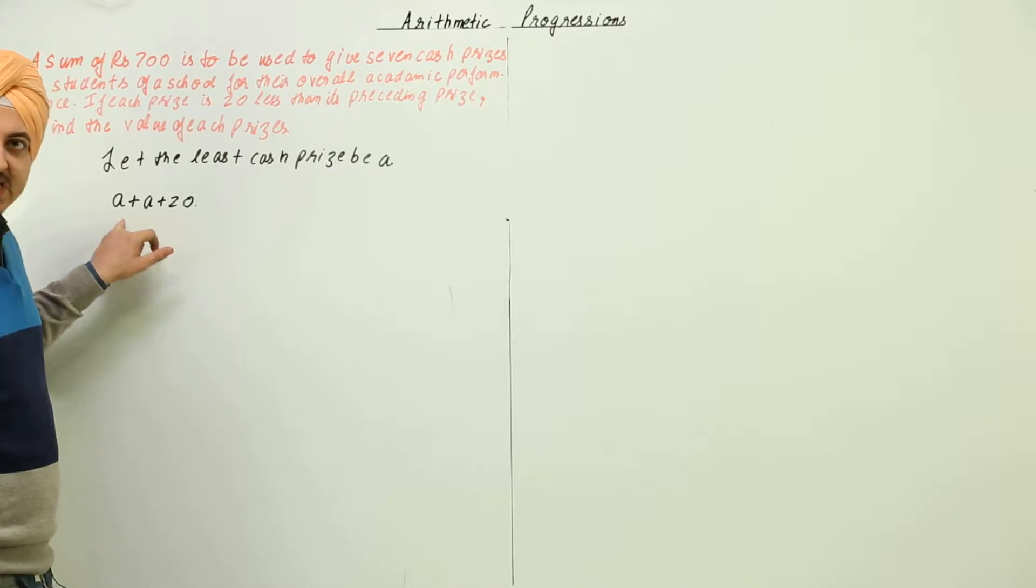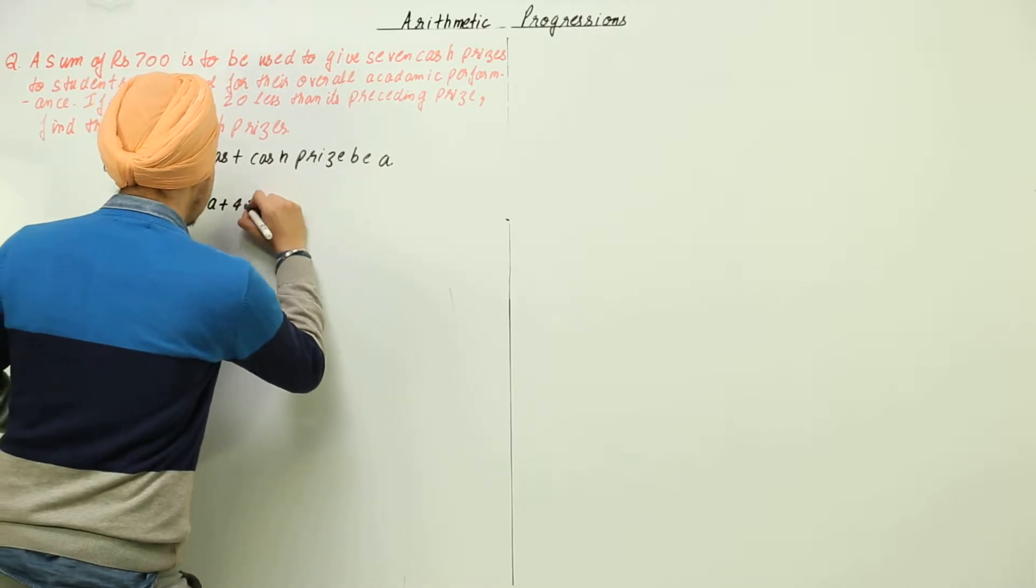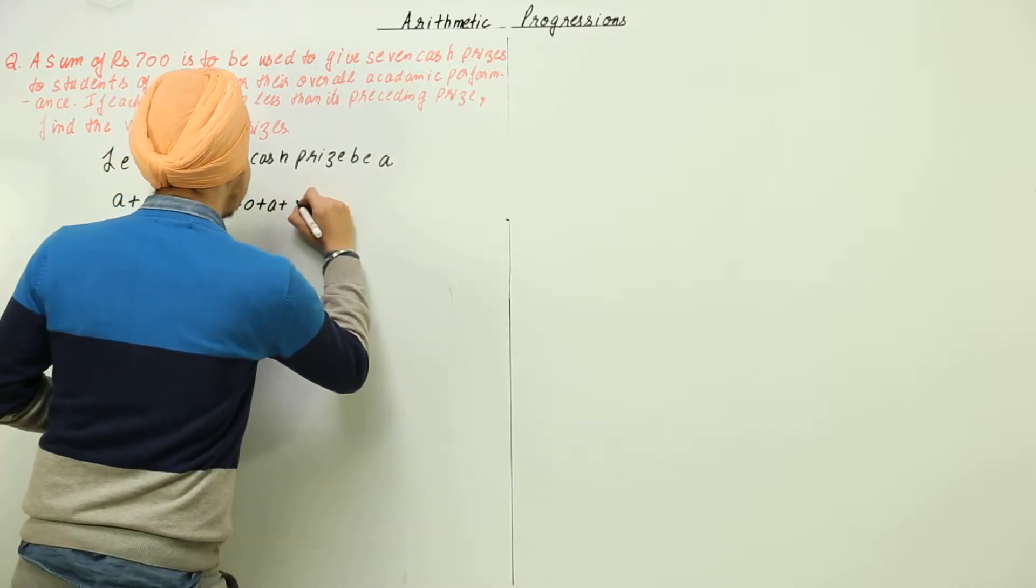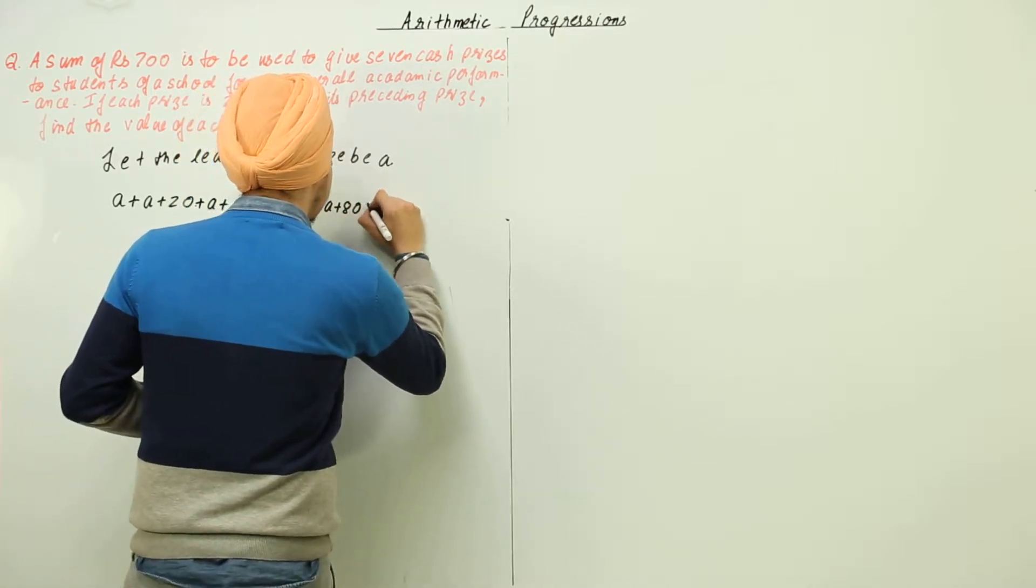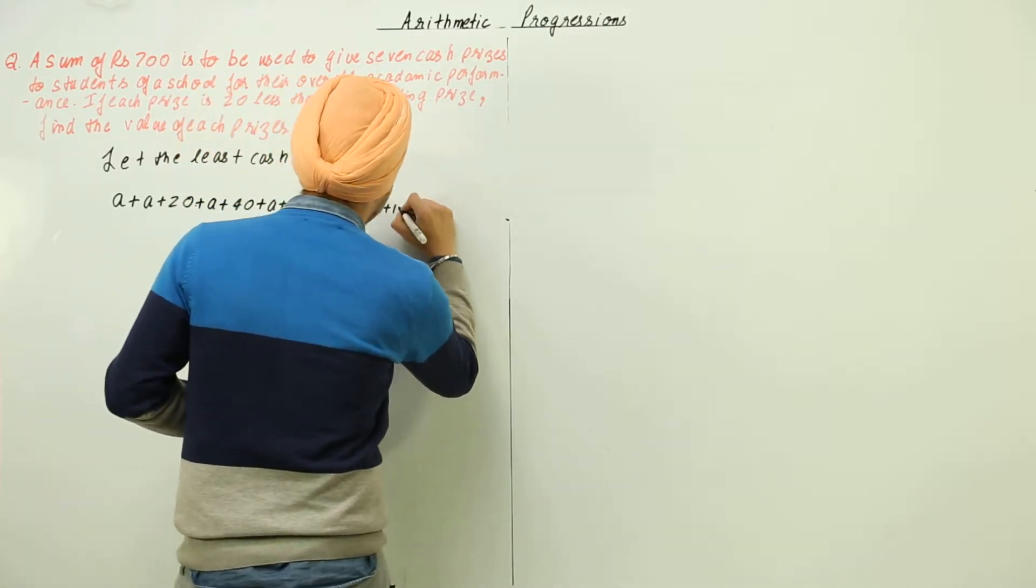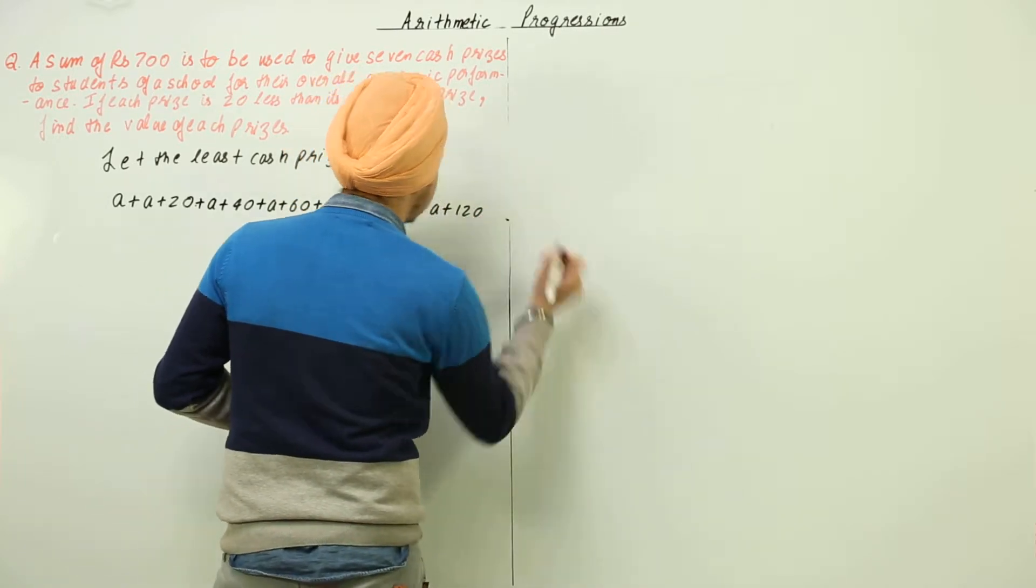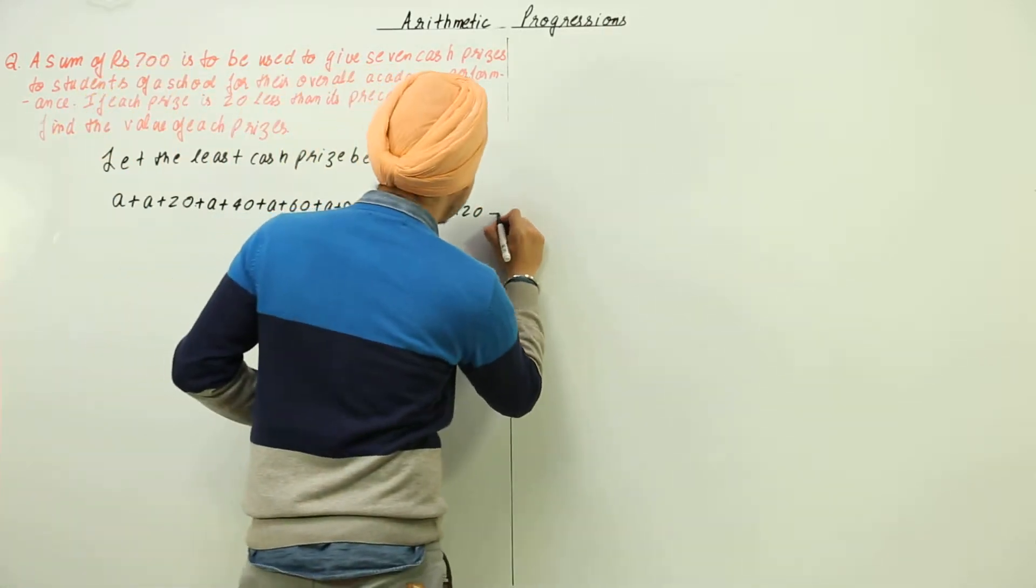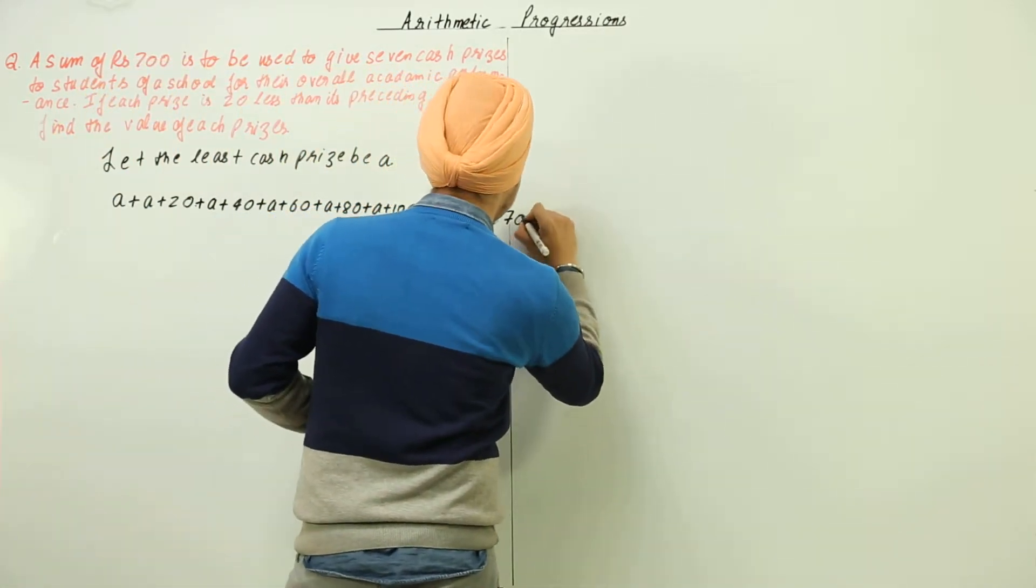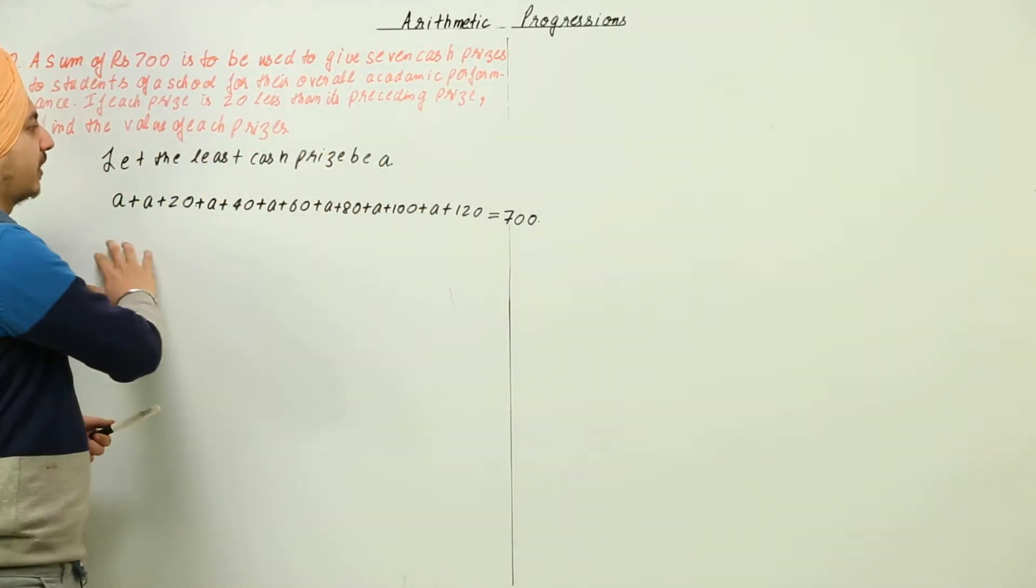This is the first that is a, the second is a plus 20, the third is a plus 40, the fourth is a plus 60, the fifth is a plus 80, the sixth is a plus 100 and the seventh is a plus 120. Now this whole is going to be equal to 700.